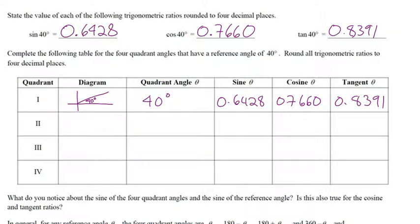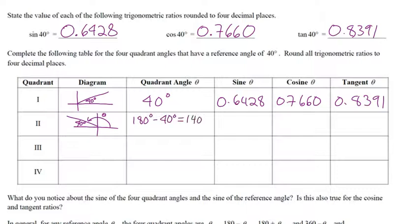In quadrant 2, we want a reference angle of 40 degrees. That's my reference angle. The quadrant angle — what I was calling the rotation angle — is 140 degrees. Why? Because it's 180 minus 40. So the quadrant angle is 180 degrees minus 40 degrees, which is 140 degrees. You go into your calculator, type in sine 140 — it's the same. Type in cos 140 — it's negative. And type in tan 140. It follows the CAST rule.